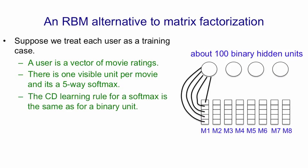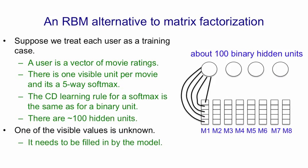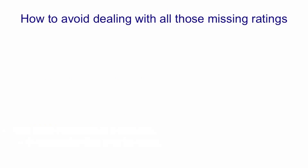You might start worrying about there being 18,000 visible units, and indeed the number of parameters is large. What we're going to do is learn a model and then try to fill in one of the missing values using that model. The problem with this approach is we don't want to have an RBM with 18,000 visible units, only a few of which have known values — that's a huge number of missing values to be dealing with. There's a neat way around that.